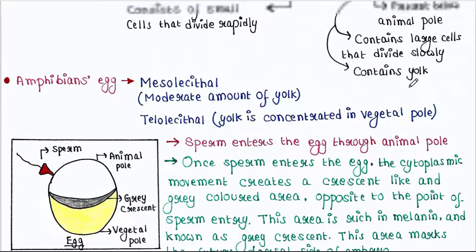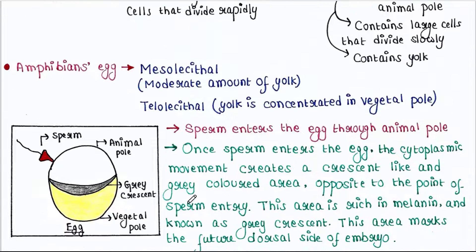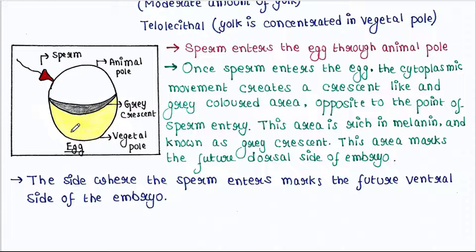The vegetal pole contains yolk, so the cell division is slow. Amphibian egg is called mesolecithal, meaning it has moderate amount of yolk, and it is telolecithal, meaning the yolk is concentrated in the vegetal pole. Now the sperm enters the egg through animal pole. Once sperm enters the egg, the cytoplasmic movement creates a crescent-like, gray-colored area opposite to the point of sperm entry. This area is rich in melanin and known as gray crescent. This area marks the future dorsal side of embryo. The side where the sperm enters marks the future ventral side of the embryo.